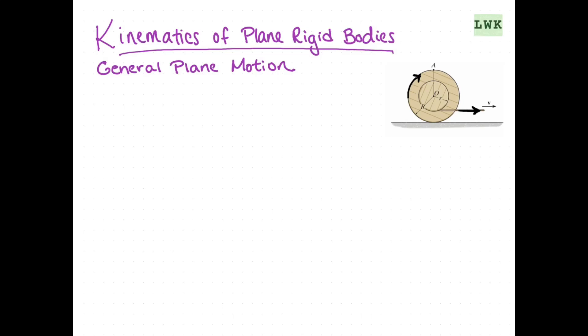At this point, we've discussed translation and rotation of plane rigid bodies. We're going to conclude our discussion of our three types of motion by talking about general plane motion.